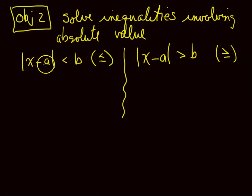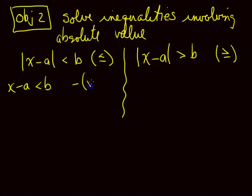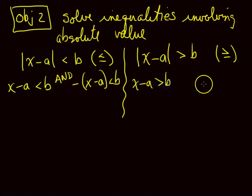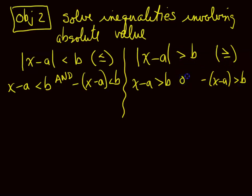You say: use the positive part, so X minus A is less than B, and then use the opposite: the opposite of X minus A is less than B. For less than, you always use AND — if you've got the absolute value on the left and everything else on the right, you use AND. For the greater than situation, you do the same split, but for greater than or greater than or equal to, it's OR.